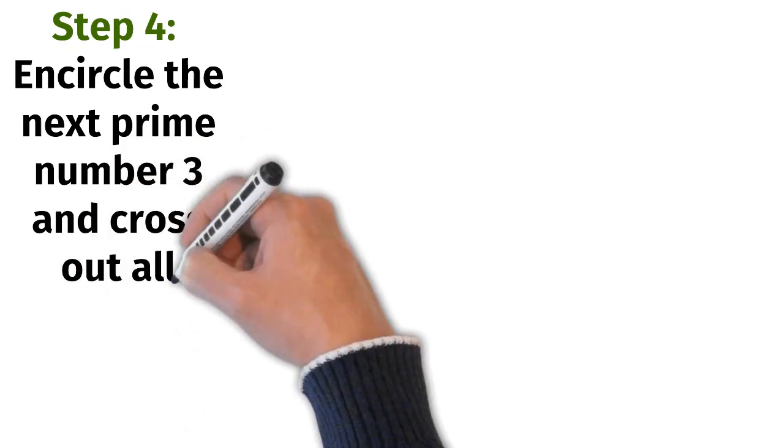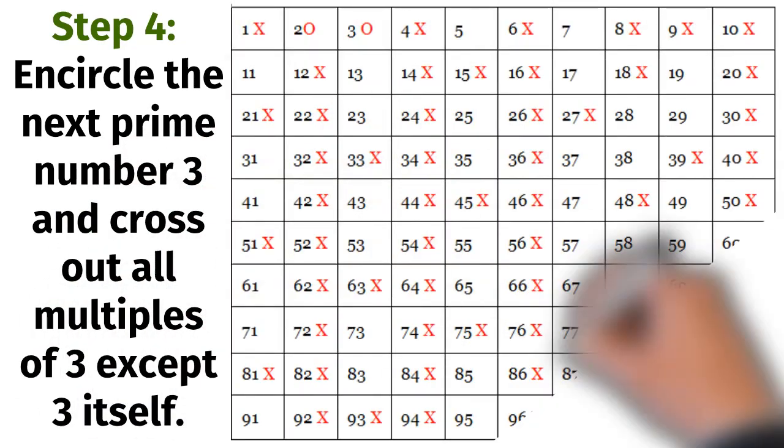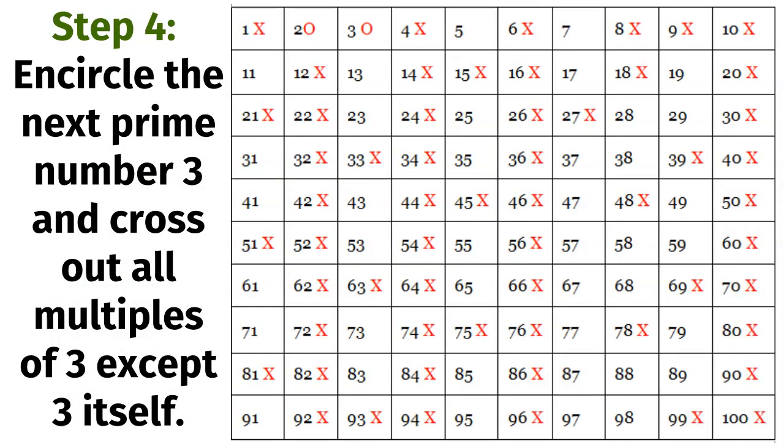Step 4: encircle the next prime number 3 and cross out all the multiples of 3 except 3 itself.